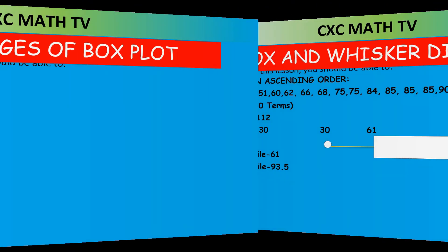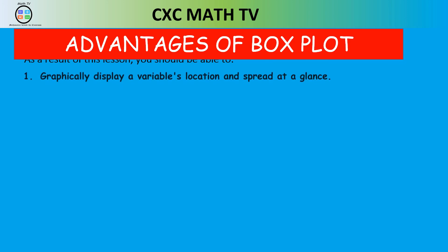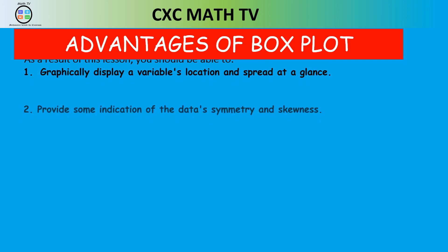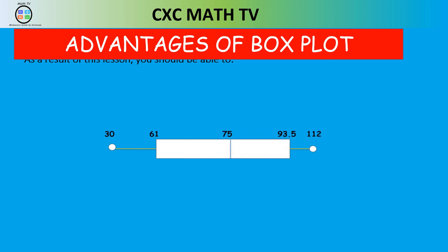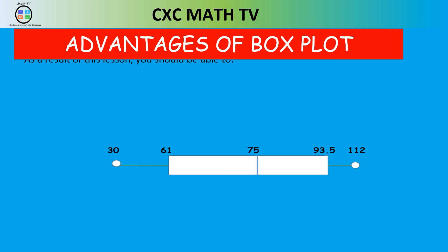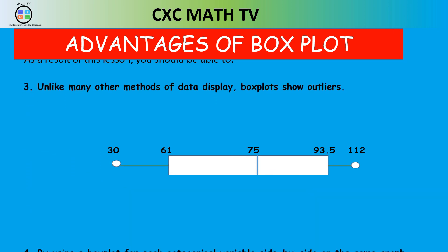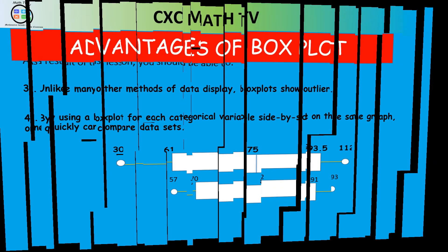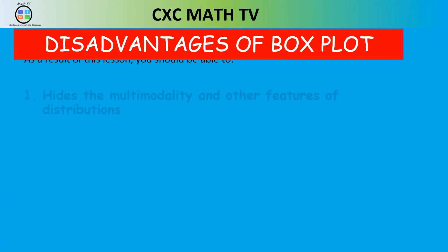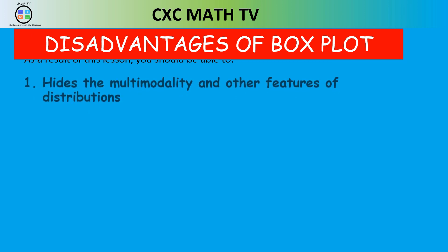Advantages of the box plot: it graphically displays a variable's location and spread at a glance, may indicate data symmetry, and clearly shows outliers. By placing two box plots side by side you can easily compare two data sets — a big advantage. The big disadvantage is that it hides multi-modality and other distribution features; from the box plot you can't determine standard deviation or whether the data has more than one mode.